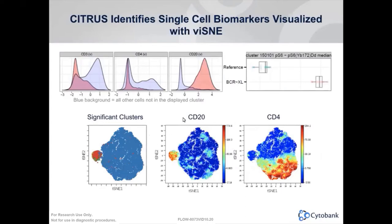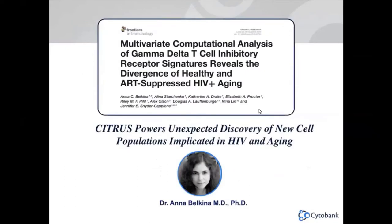Once the cluster is identified, you can overlay it back to your viSNE map. Once on the viSNE map, you can highlight with a third channel to check expression of lineage markers like CD20. You will see that the most significant cluster belongs to B cells. You may also turn on the phospho-S6 channel to see the expression level of that particular cluster. So I've shown you how you can use Citrus and the data visualization and interpretation tools within Cytobank. If you have any questions, I'll be happy to take them during the Q&A session.